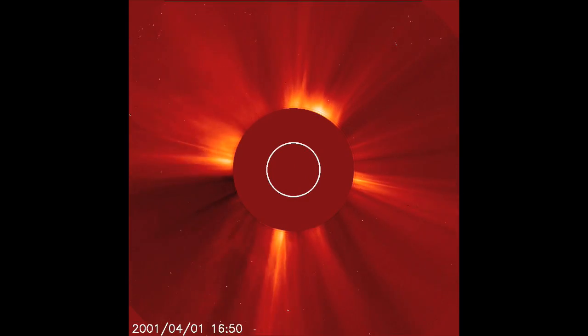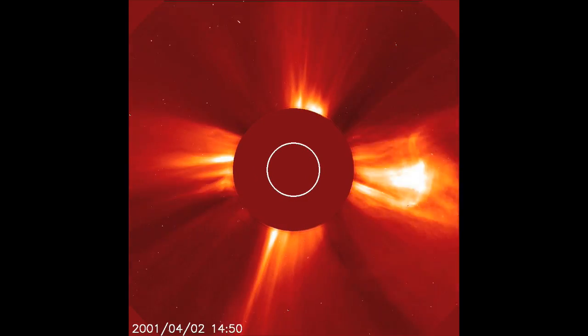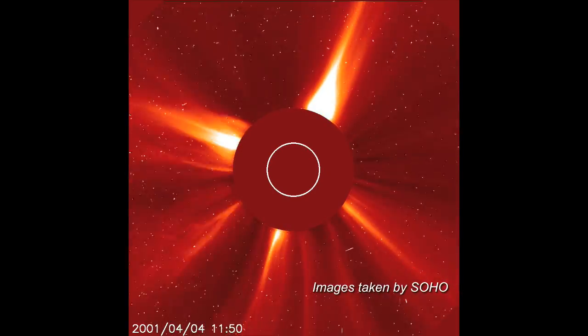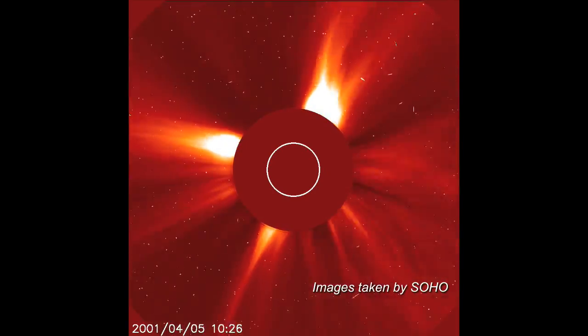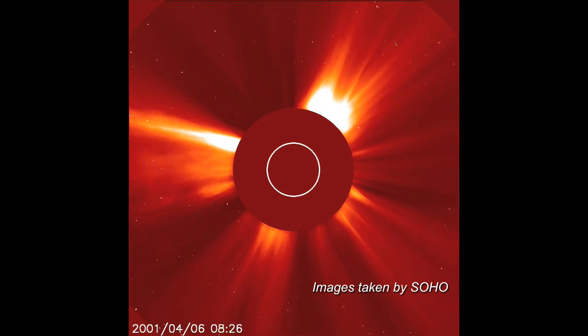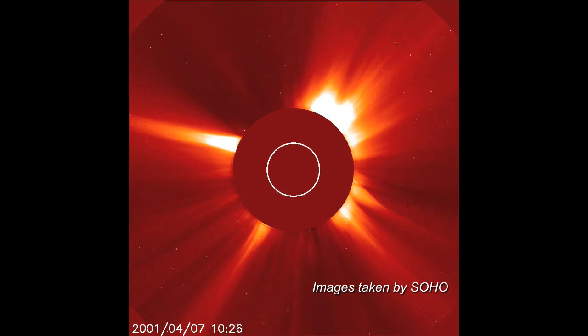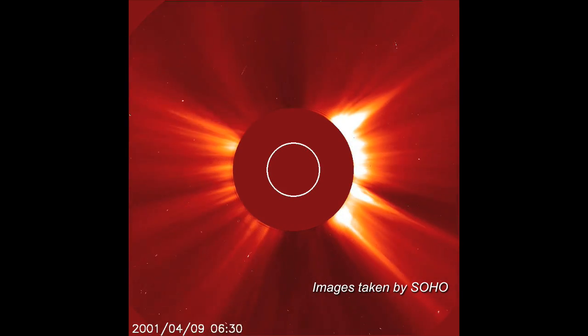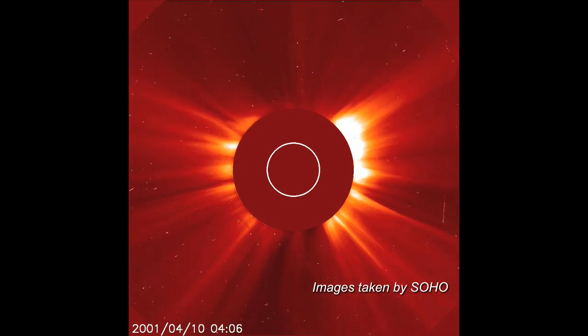To image the solar corona, one instrument onboard SOHO uses a coronagraph to make an artificial eclipse to mask the dazzlingly bright disk of the Sun. Why the gas in the Sun's corona is so hot is one of the mysteries that SOHO is helping to solve.